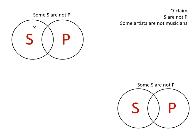In this last video on how to diagram categorical claims, I'm going to show you how to diagram the O-claim. That is the claim of the form some S are not P.